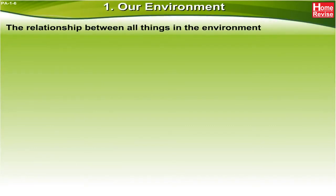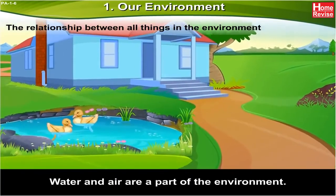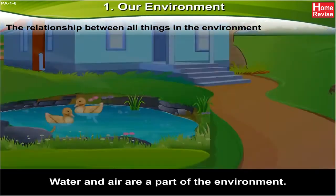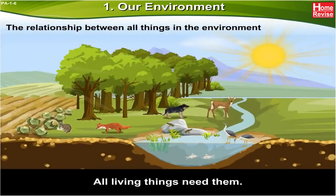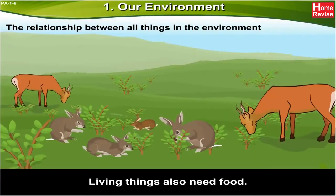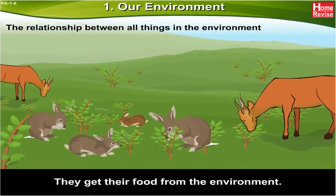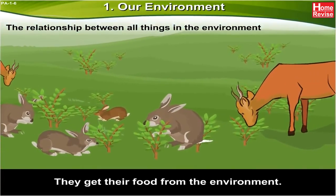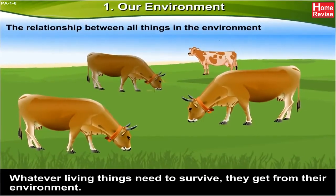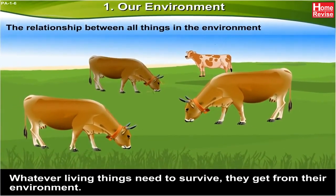The relationship between all things in the environment. Water and air are a part of the environment, and all living things need them. Living things also need food, and they get their food from the environment. Whatever living things need to survive, they get from their environment.